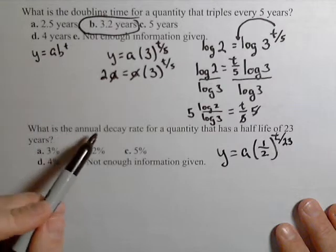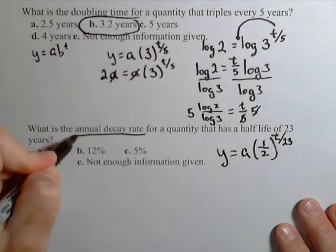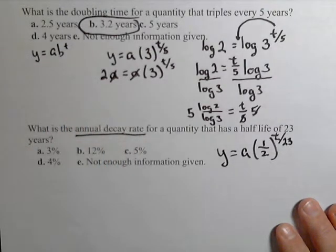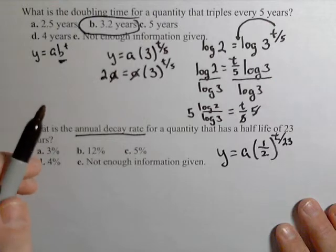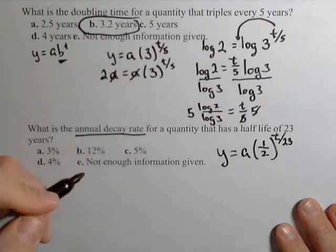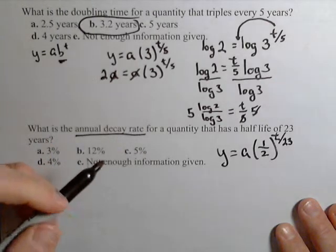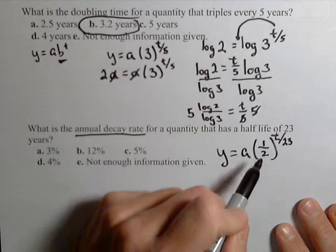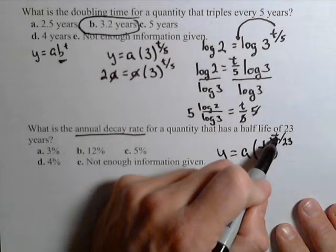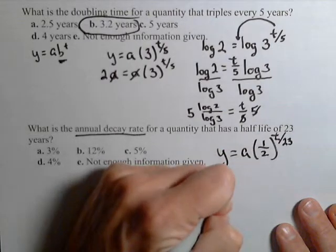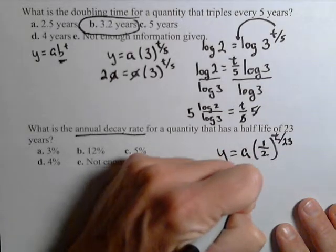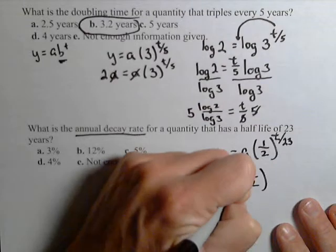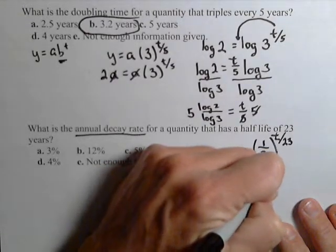Now, what I'm being asked here is a little bit different. I want the annual decay rate. What percent is it decaying by each year? So what I need is the base of my exponential function. You've got to be a little careful here. One half is not the base. It's not decaying by 50% every year. The base is what's being raised to the t power. So the base is one half to the 1 over 23rd.